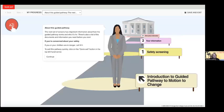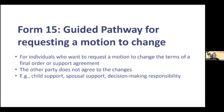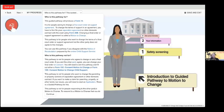I'd like to walk you through some of our newer guided pathways to show you how we at CLEO are using A2J and its functionality to break down complicated legal processes. I'm going to be starting with the Form 15 guided pathway for requesting a motion to change. This pathway is for requesting a change in a family law matter. It is for individuals who want to request a motion to change the terms of a final order or support agreement and the other party does not agree with the changes. Individuals can ask to make changes to various family law matters, for example, child support, spousal support, decision-making responsibility — what used to be called custody — as well as parenting time or what used to be called access. The pathway begins with instructions and information that ensure the user is in the right place, and it also informs the user of documents and information they will need to complete the pathway.